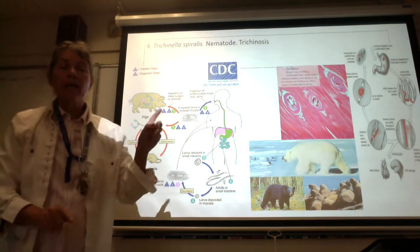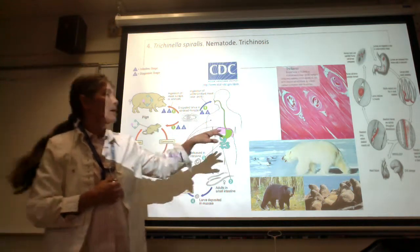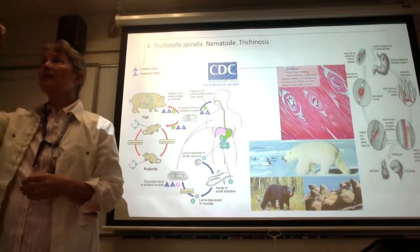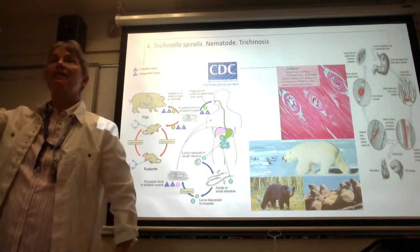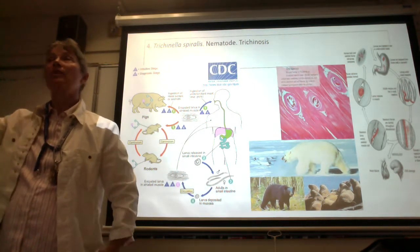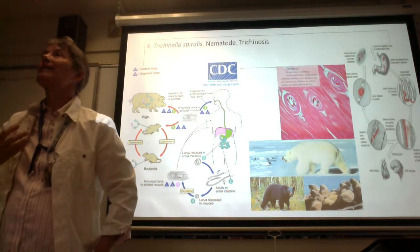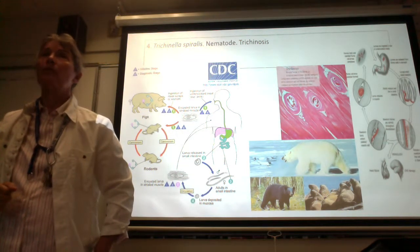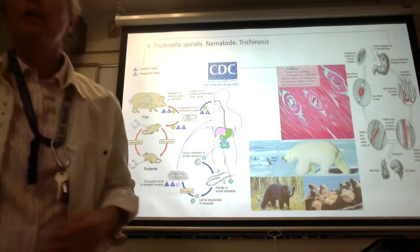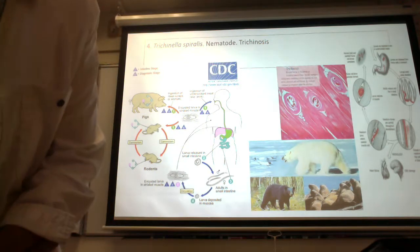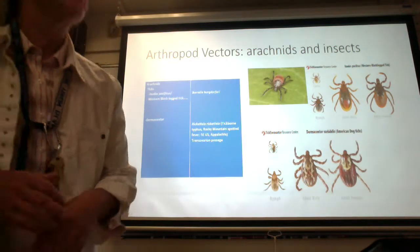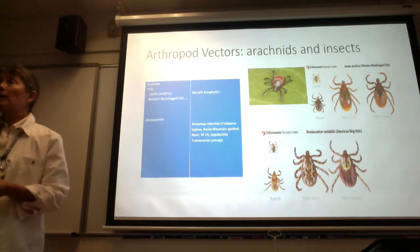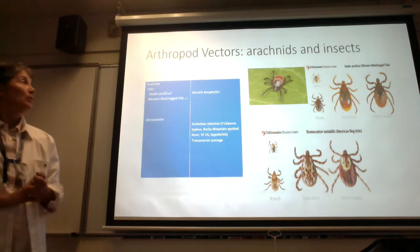So I think what we're going to do next is go to arthropod vectors - a lot of this will be reviewed but we have a few new arthropods to introduce. Arthropod vectors: arthropods belong to kingdom Animalia. Arthropod literally means jointed legs or jointed feet. They have jointed legs, and instead of having an internal skeleton, they have an external exoskeleton that crunches if you step on it - like cockroaches.